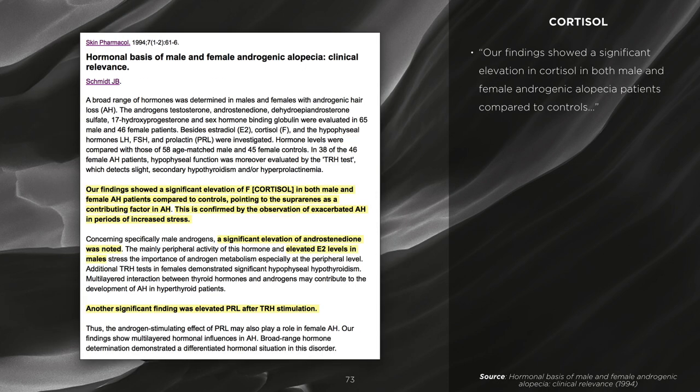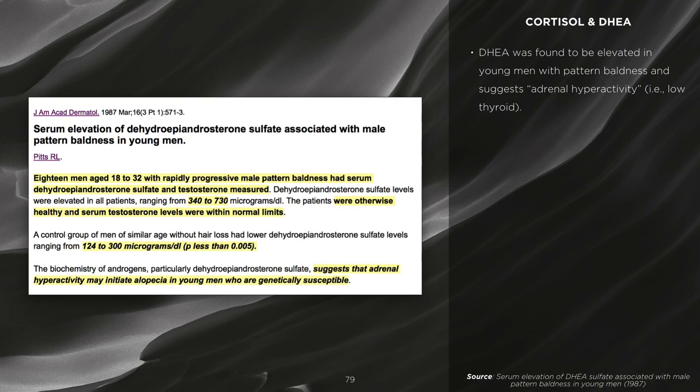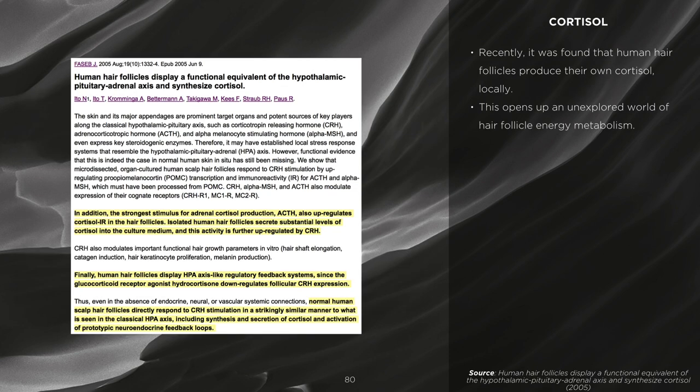Unsurprisingly, it was shown that there was a significant increase in cortisol in both male and female patients with androgenic alopecia. Similarly, the protective hormone DHEA rises during stress and parallels cortisol. DHEA was found to be elevated in young men with pattern baldness and suggests that adrenal hyperactivity — i.e., low thyroid — is part of the pathogenesis of pattern baldness. Recently, it was found that human hair follicles produce their own cortisol locally, opening up an unexplored world of hair follicle energy metabolism.